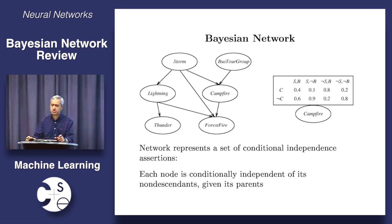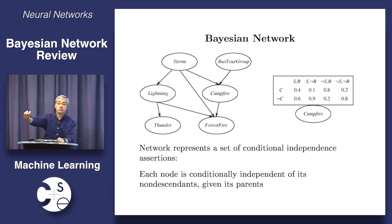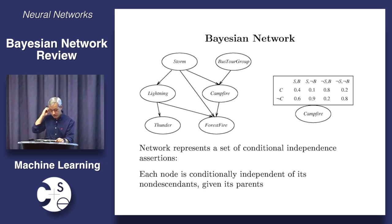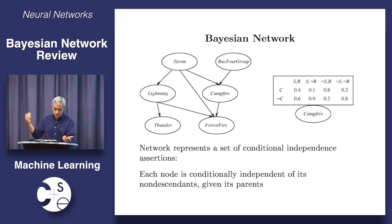And remember, a vision network is actually a more powerful thing than most of the stuff that we saw before, like rule sets, decision trees, nearest neighbor, and so on. Because those algorithms all gave us at the end of the day was a way to make the prediction of one value — is this a good credit risk or a bad credit risk? Does this patient have diabetes or not? A vision network actually allows you to predict any subset of variables given any others. It's a much more flexible thing. It's like having an exponential number of classifiers all baked into one representation. Very handy. So for example, in this vision network here, you could predict campfires as a function of storm and lightning, or as a function of storm and bus tour group, or predict anything else as a function of anything else.